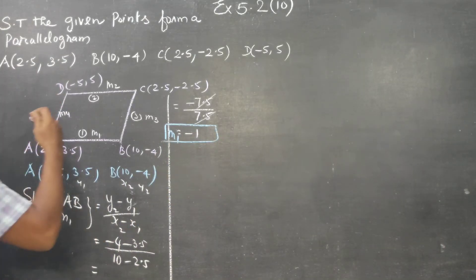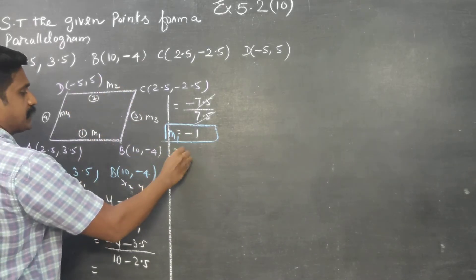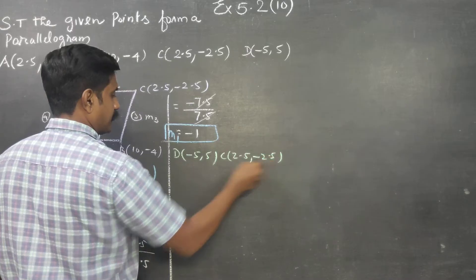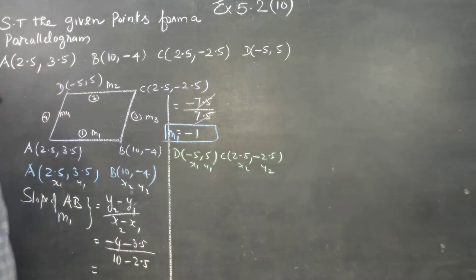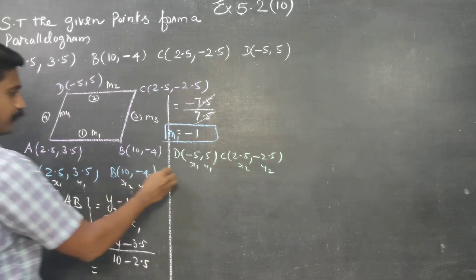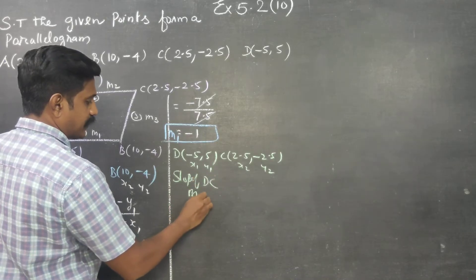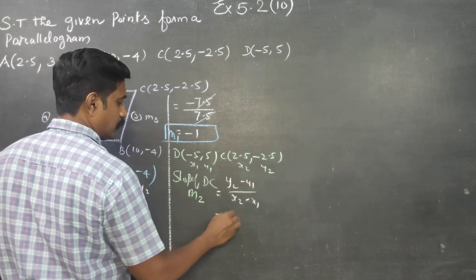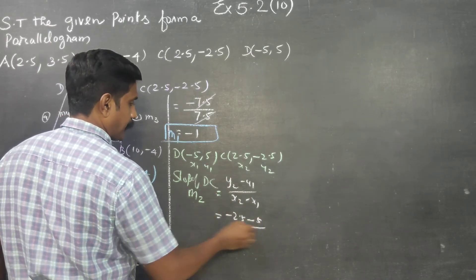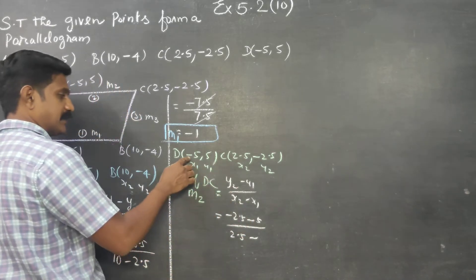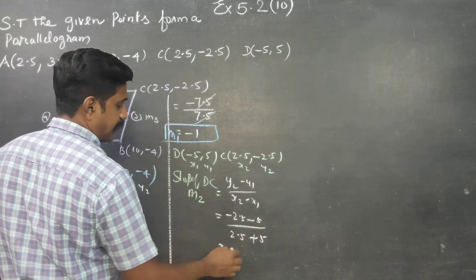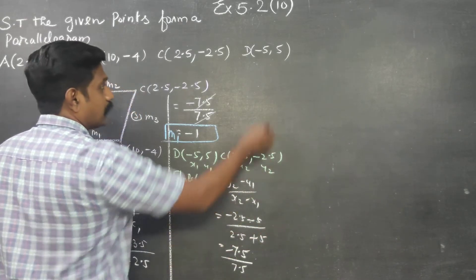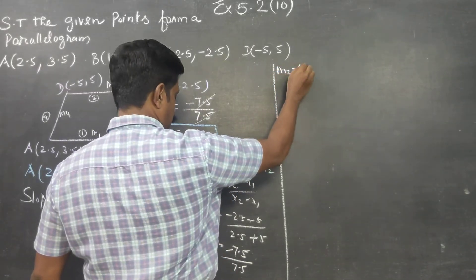After finding M1, I am directly going for M2. DC will be there. D order point is minus 5, 5. C order point is 2.5, minus 2.5. This is X1, Y1, X2, Y2 — slope of DC. This is my M2. Y2 minus Y1 by X2 minus X1. Y2 is minus 2.5 minus 5 by 2.5 minus minus 5, which is 2.5 plus 5. That gives minus 7.5 by 7.5. Cancel. M2 is equal to minus 1.